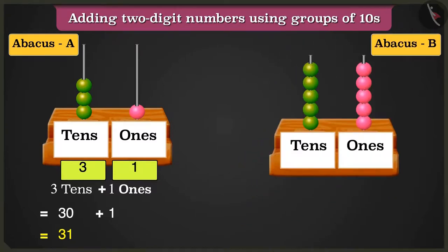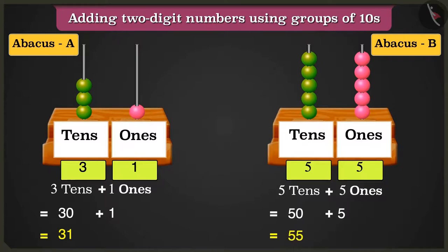So abacus B has 5 tens and 5 ones. So here 5 tens, that are 50, added to 5 ones, that are 5, will make the total number as 55.